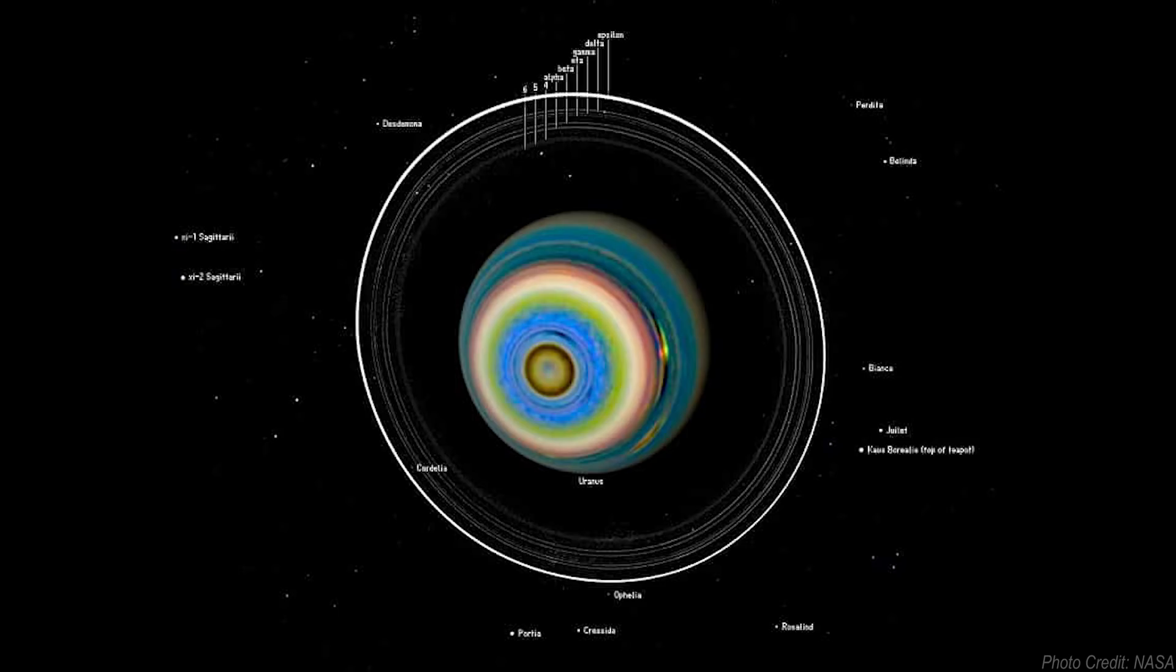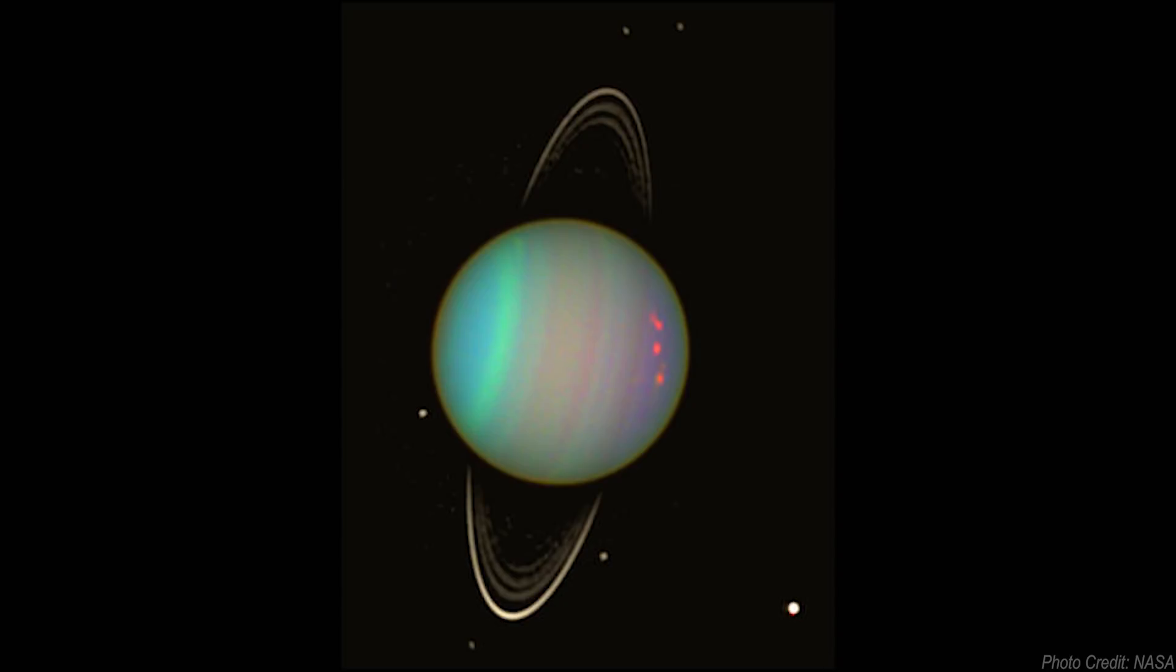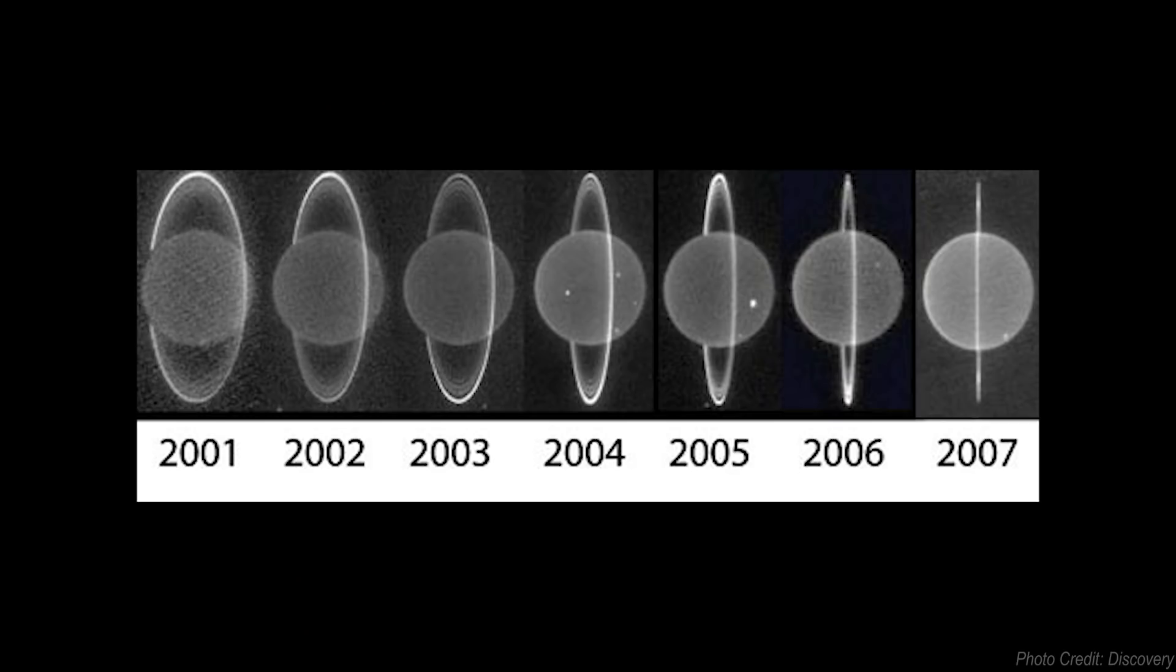Uranus has two sets of very thin dark colored rings consisting of 11 inner rings and two outer rings. Together the rings extend out from 12,400 to 25,600 kilometers from the planet. Unlike Saturn, the rings are very narrow and widely spread apart that it has more gaps than it has rings.